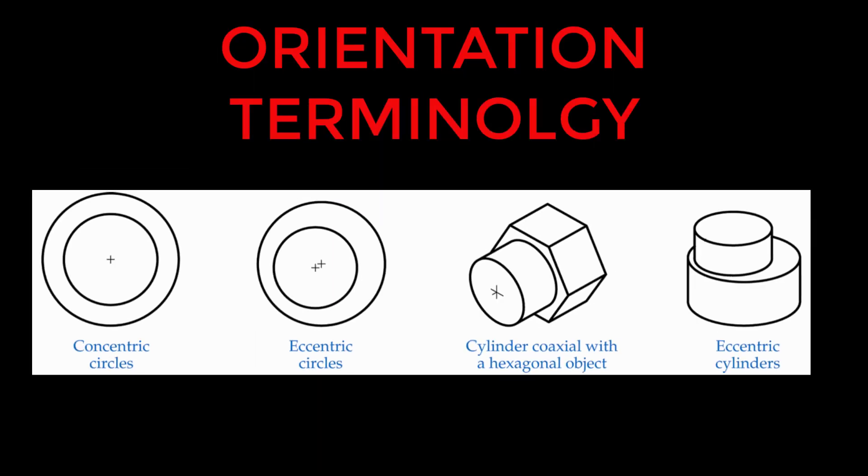Circles and cylinders have their own terminology for orientation. Two circles that share a common center point are known as concentric, whereas two circles that don't share a common center point are eccentric. A cylinder that shares a center point or a center line with another cylinder is known as coaxial.